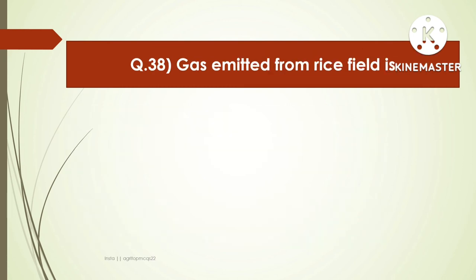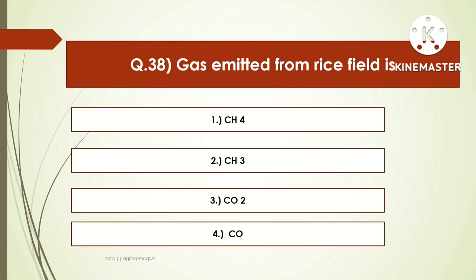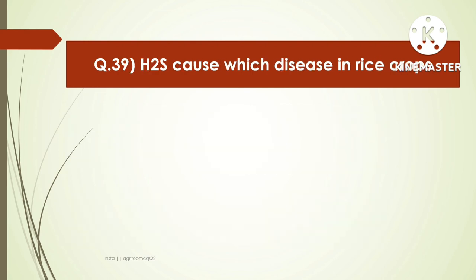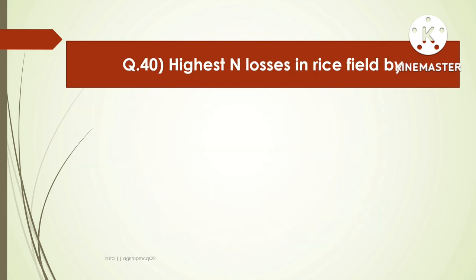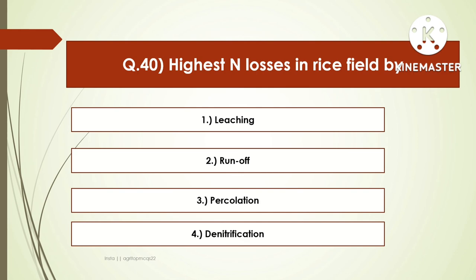The next question is: the gas emitted from rice fields is — options are CS3, CO2, carbon monoxide, or methane. The right answer is methane. Methane gas is emitted from rice fields, and methane is also known as marsh gas and biogas. The next question: H2S causes which disease in rice? Options are blight, leaf spot, root rot, or Akiochi. The right answer is Akiochi. Akiochi disease is caused due to H2S toxicity. The next question: the highest nitrogen loss in rice fields is by — options are leaching, runoff, percolation, or denitrification. The right answer is denitrification. However, in all crops overall, the highest loss of nitrogen is due to volatilization at 60%.